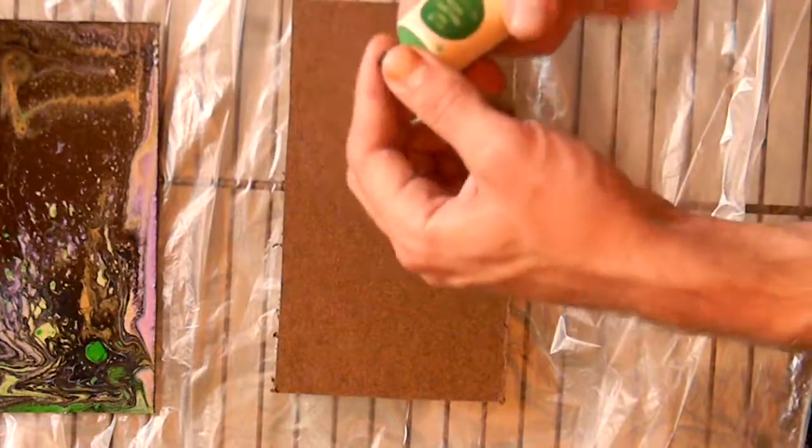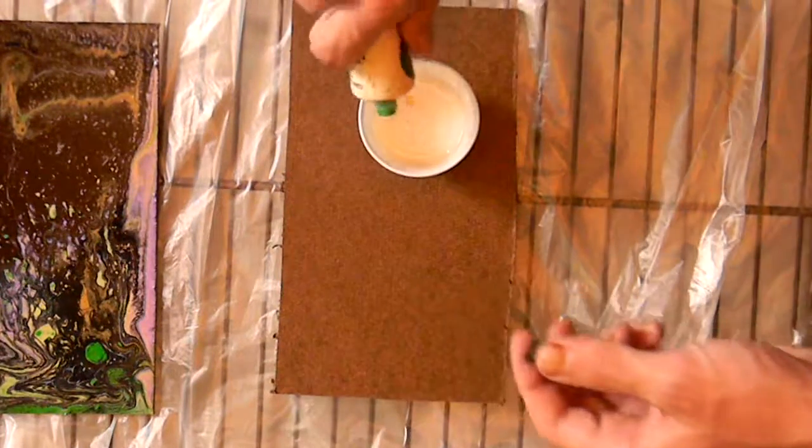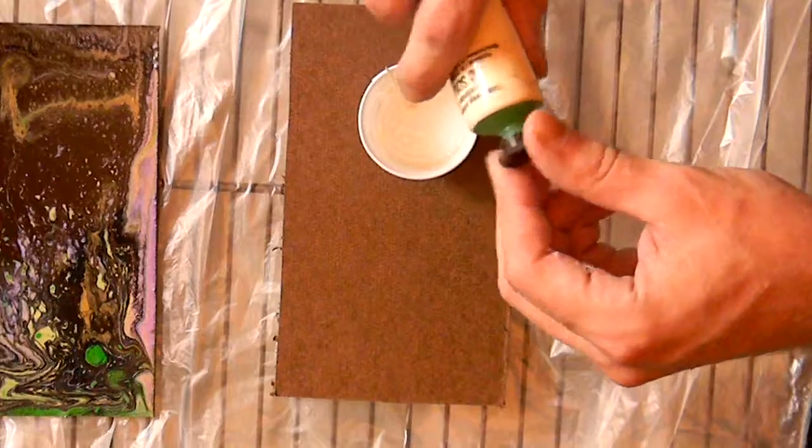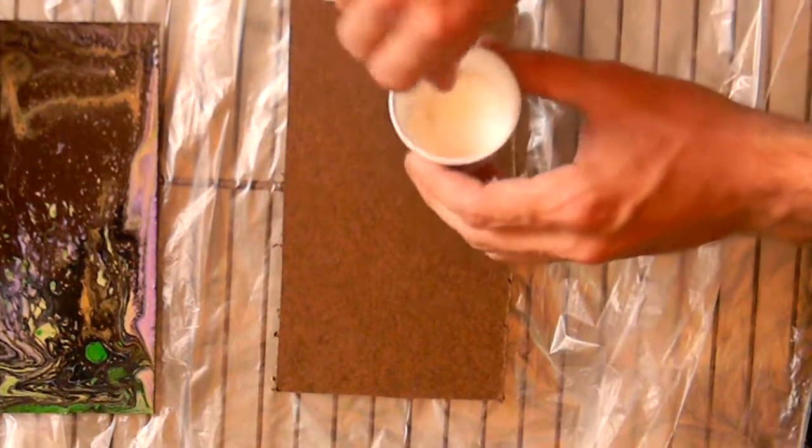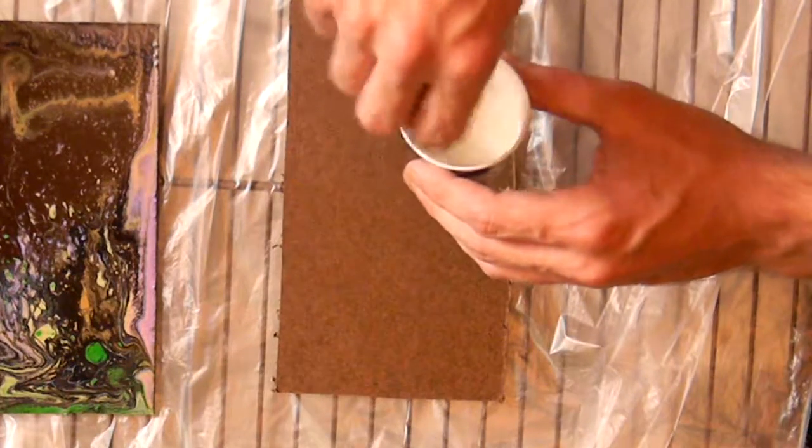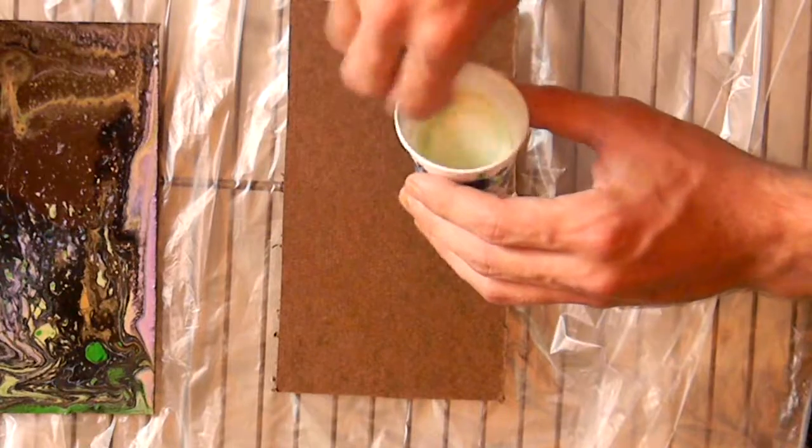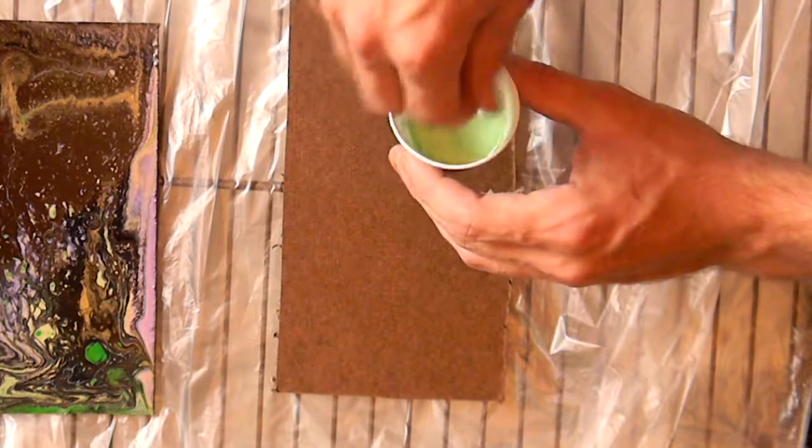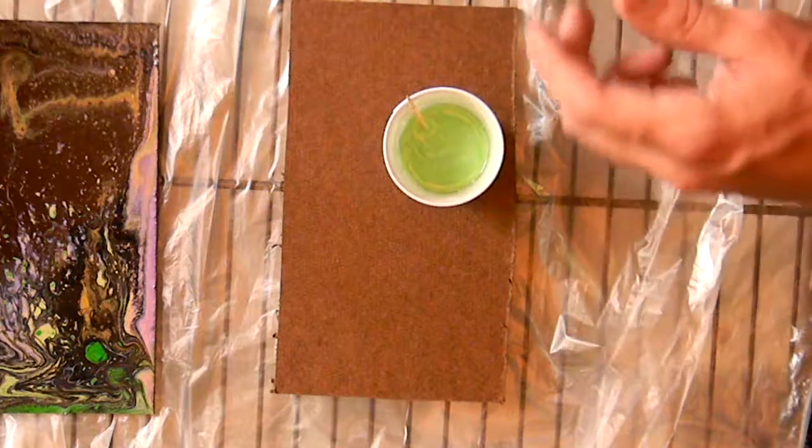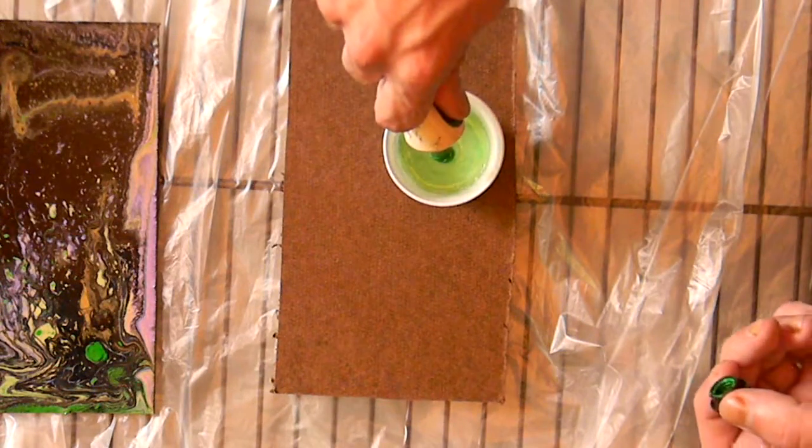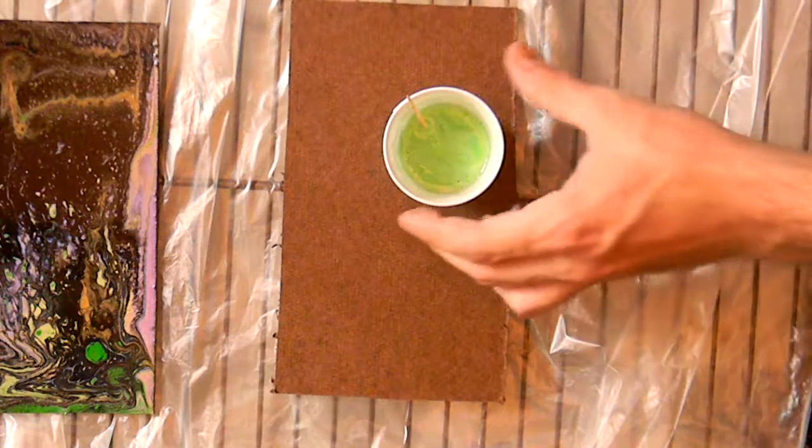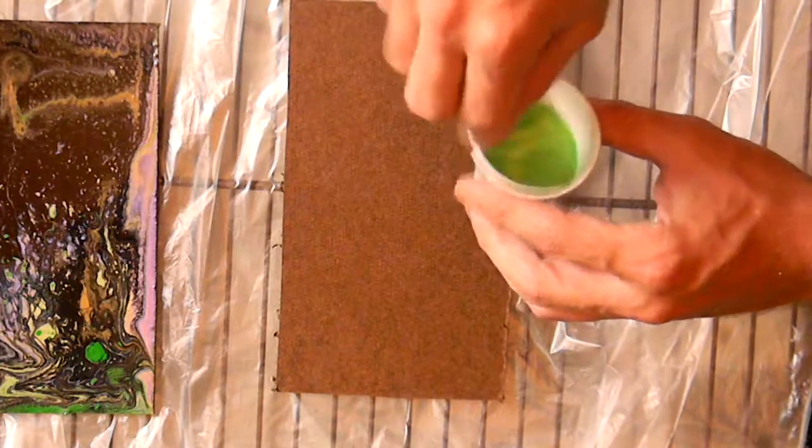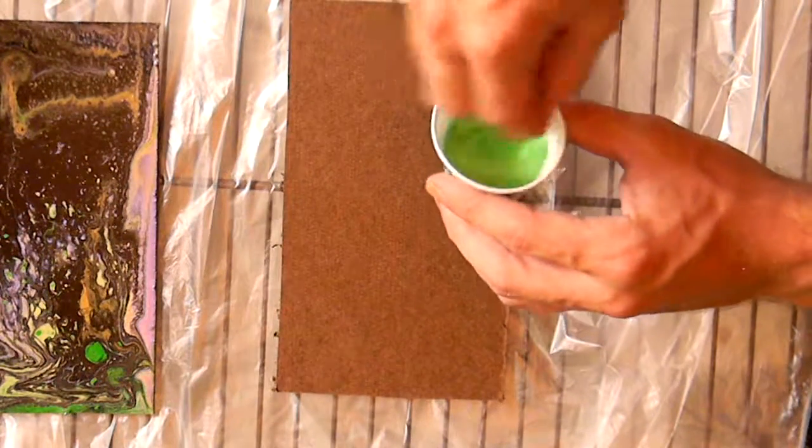You want to add your color, for this color I'm going to use this brilliant green paint. You want to use about two parts paint to five parts Floetrol and two parts water. So we're going to mix this together, I might have not added enough paint for this one. Yeah, let's go ahead and add a little bit more paint. Alright, that's starting to look the color that I want it to be.